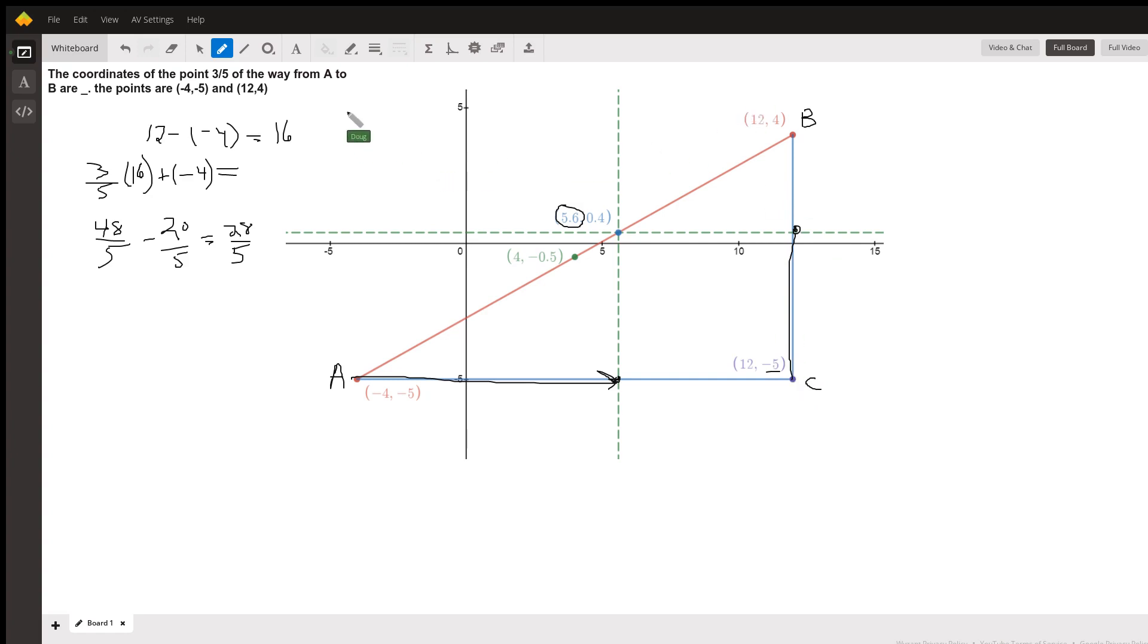We'll take three-fifths of nine. Whatever that distance is, we started at negative five and we want to go up this additional distance, which is 27 fifths. So we're starting at negative five and adding on three-fifths of the whole entire distance. That's 27 fifths, and I'll convert this to fifths, minus 25 fifths. That's two-fifths or 0.4, so that's where this coordinate comes from.